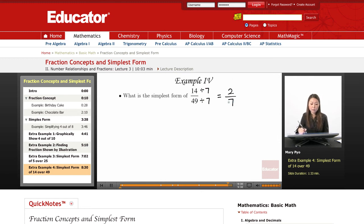I look at these two numbers now. I want to see if there's a common factor between 2 and 7, and the only common factor is 1, so that means I'm done. So the simplest form of 14 over 49 is 2 over 7. Okay, that is it for this lesson. Thank you for watching educator.com.